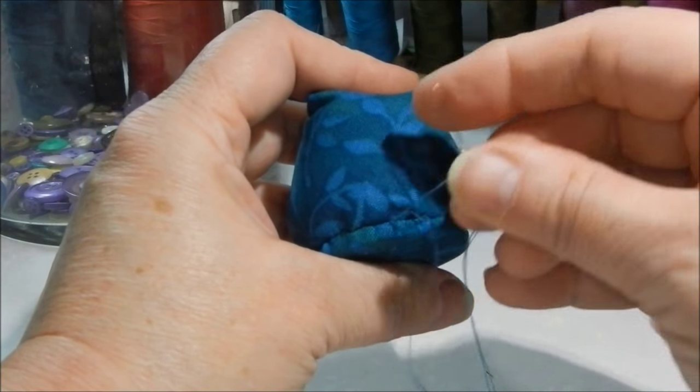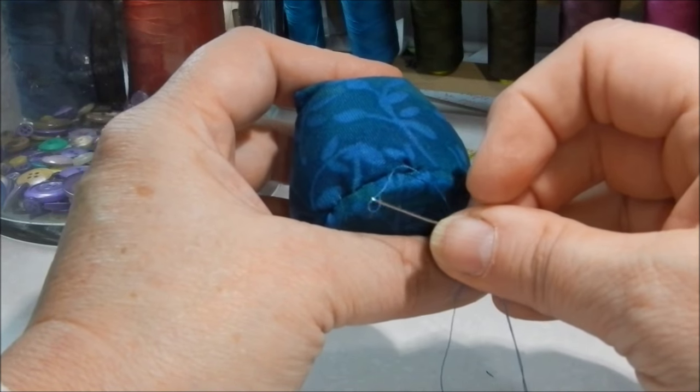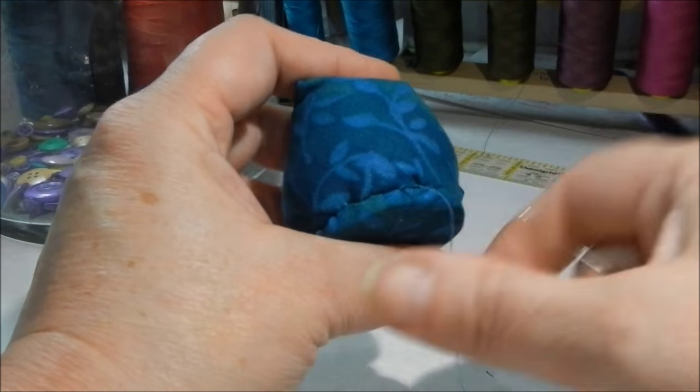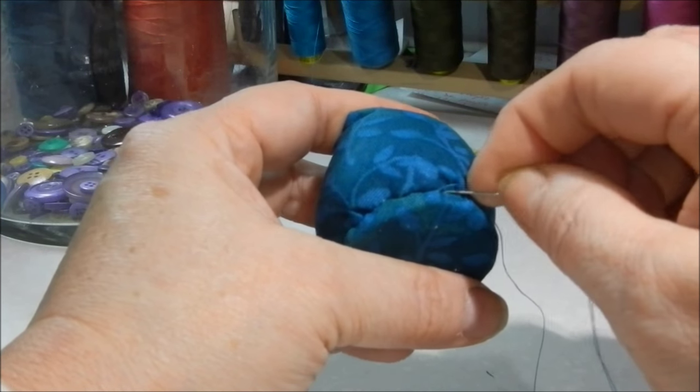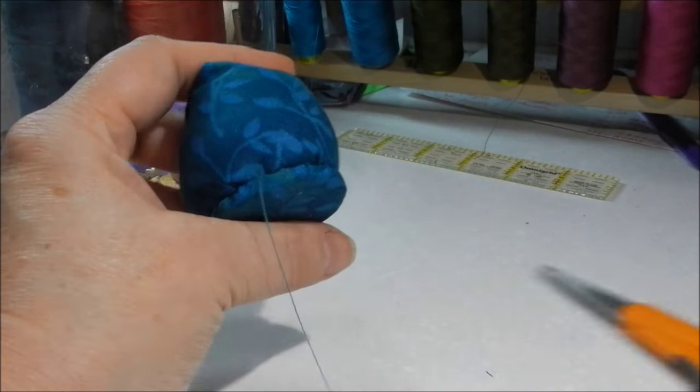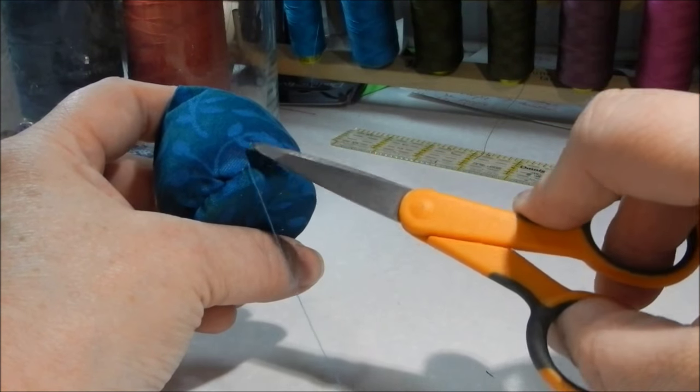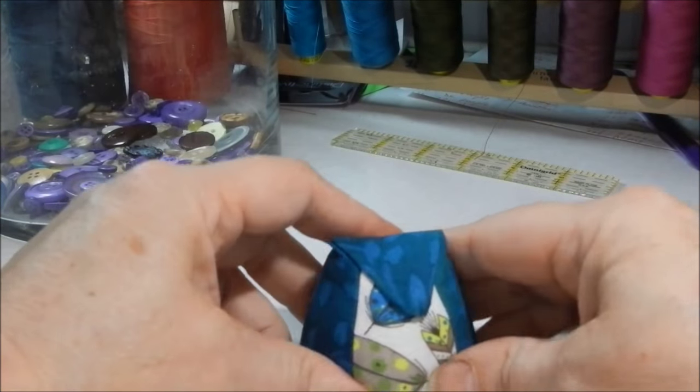And I just make a knot by going through the loop a couple times. Make a couple loops. And I pull it, and then I go back in and come out away from the knot and trim it. There we go.